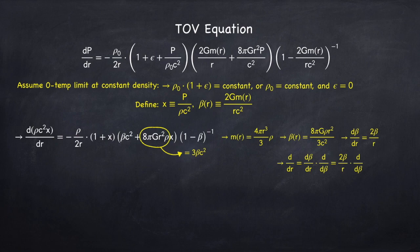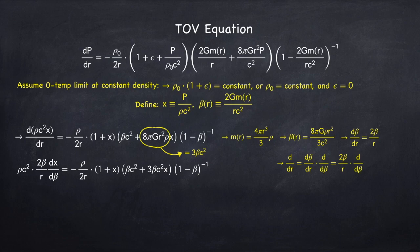Now I can use the chain rule to get that d by dr equals d beta dr times d by d beta. But I know what d beta dr is. It's 2 beta over r. So now I can replace d by dr with d by d beta in the TOV equation.